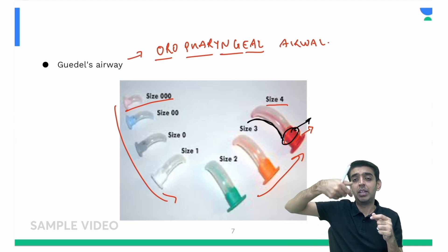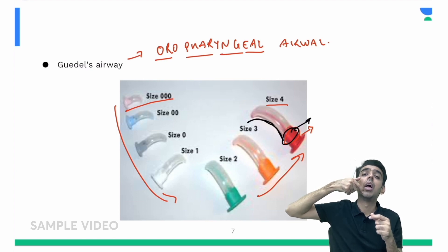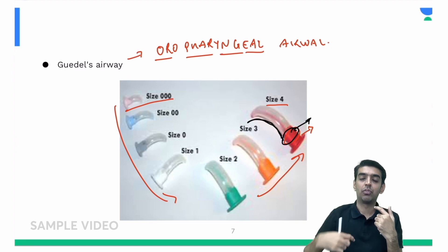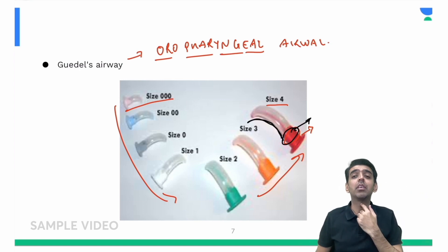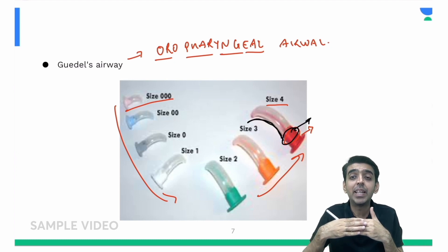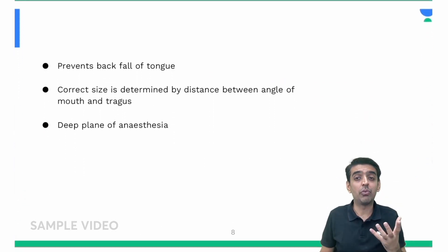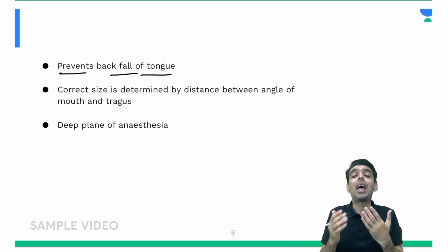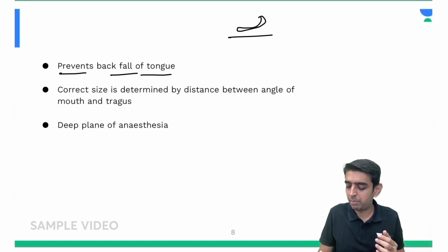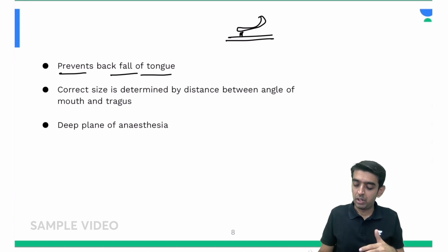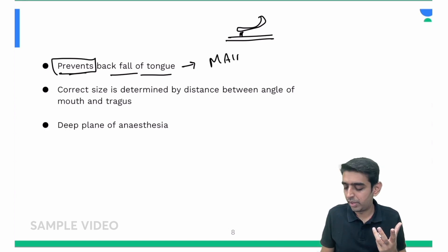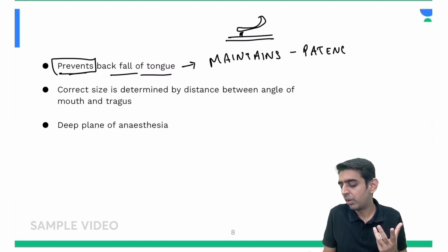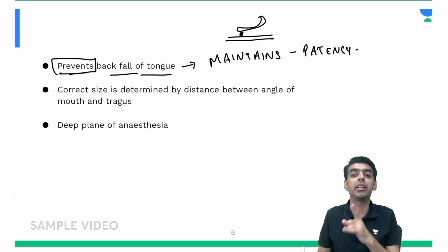To insert the oropharyngeal airway, you take it rotated 180 degrees opposite, insert it touching the palate, and then rotate it 180 degrees back and insert the rest. It helps in maintaining the patency of the airway because in unconscious patients the base of the tongue falls back onto the posterior pharyngeal wall causing upper airway obstruction. The Guedel's airway prevents this backfall of the tongue, thereby maintaining airway patency.